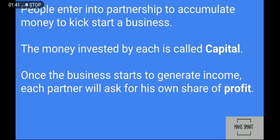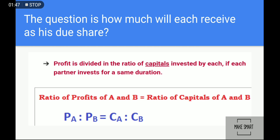This is the profit and this is the share of both of them. Now the question is: how much will each receive as their due share? Both partners contributed the same amount — five thousand each, totaling ten thousand — but it may be different, maybe one invests four thousand and another six thousand. Now, profit is divided in the ratio of capital invested by each.